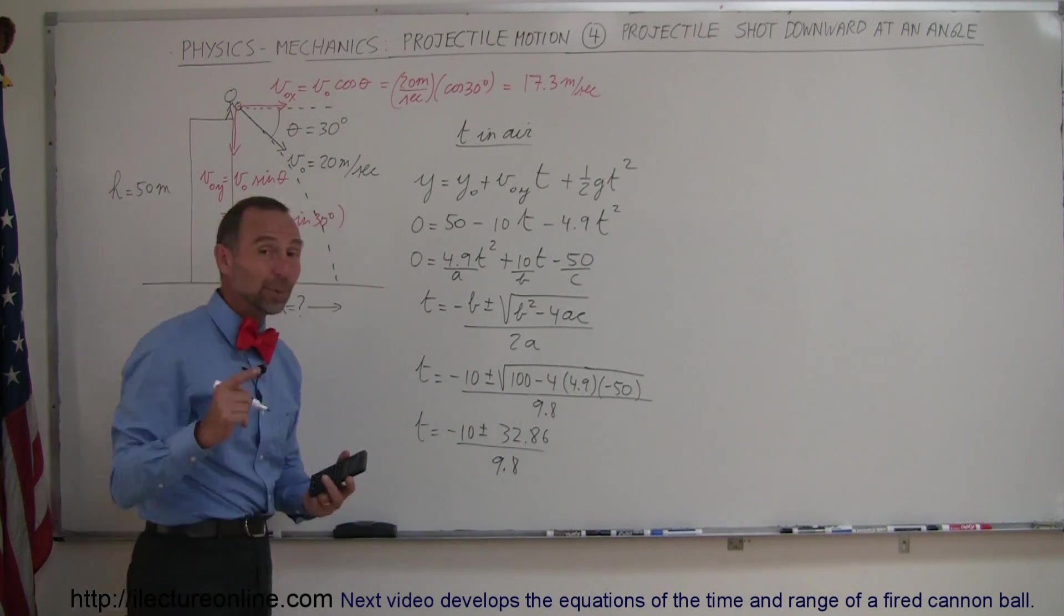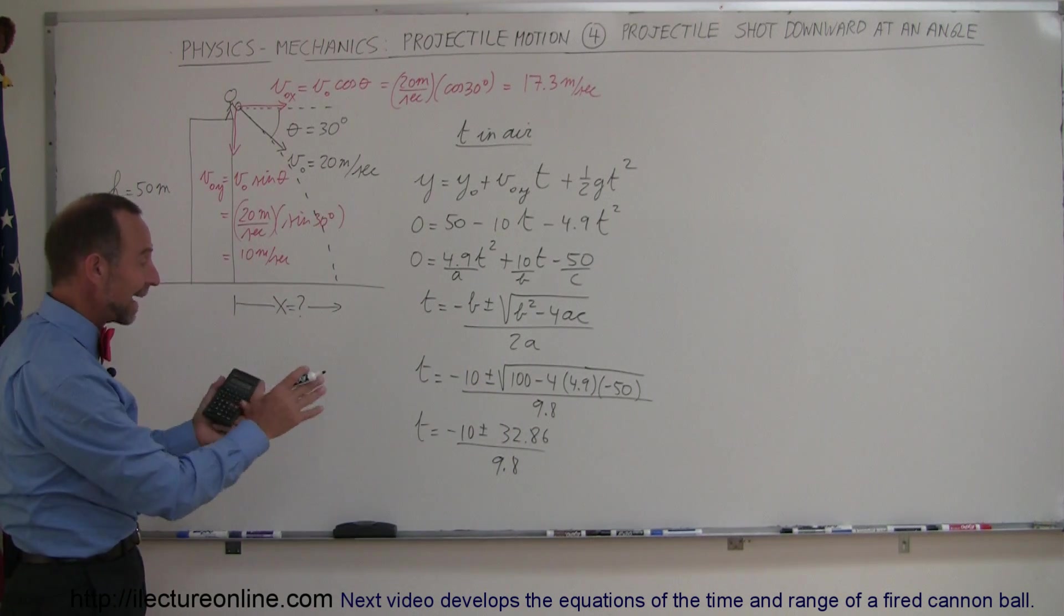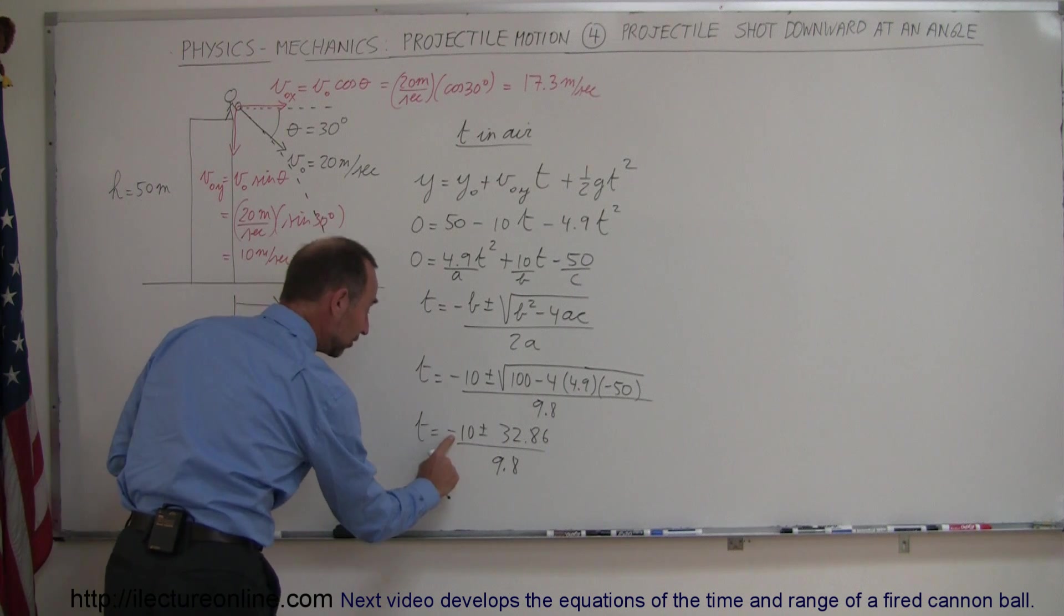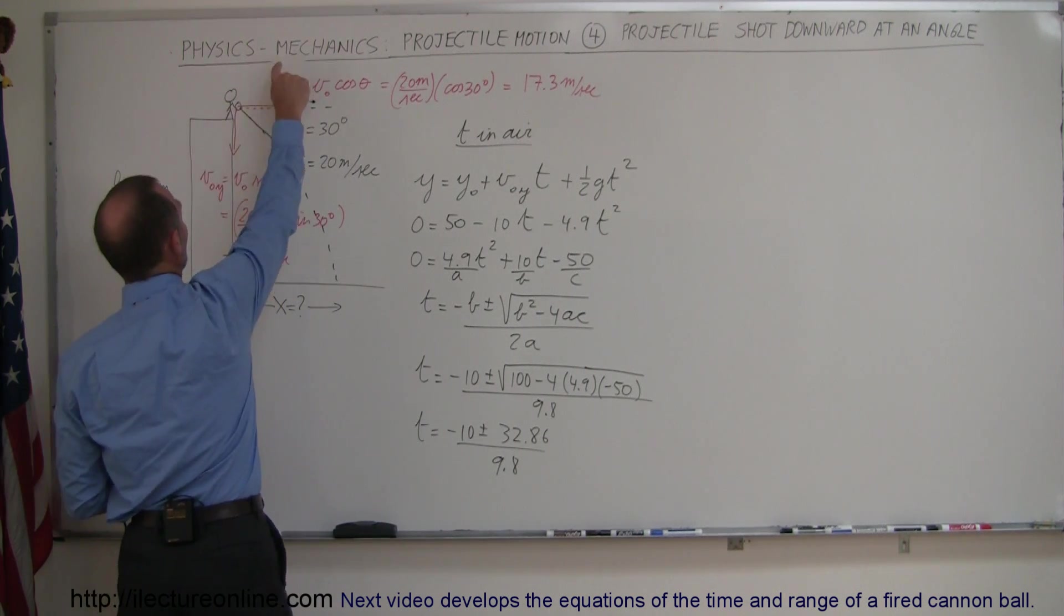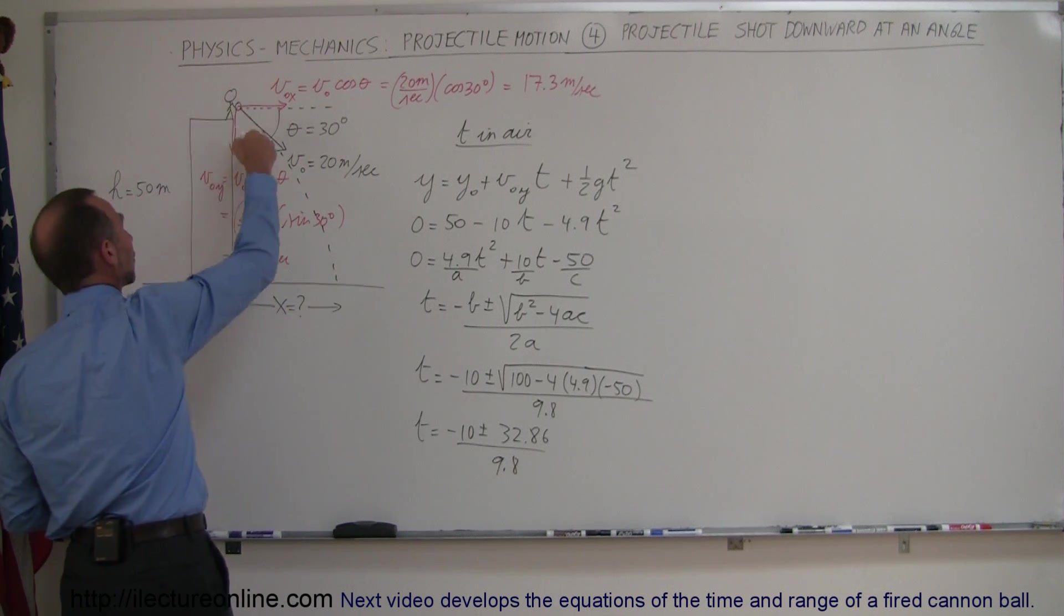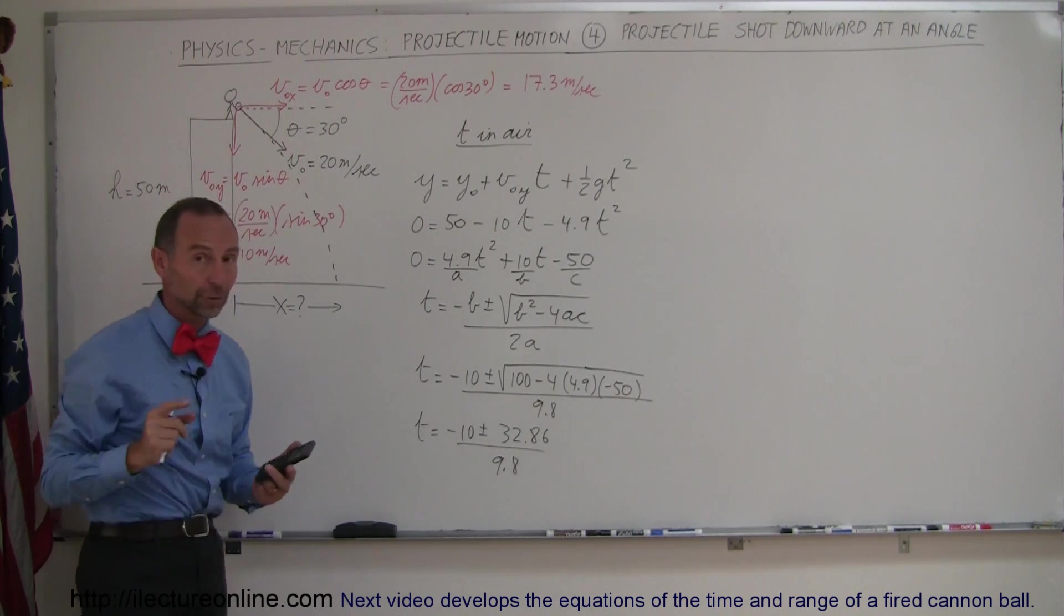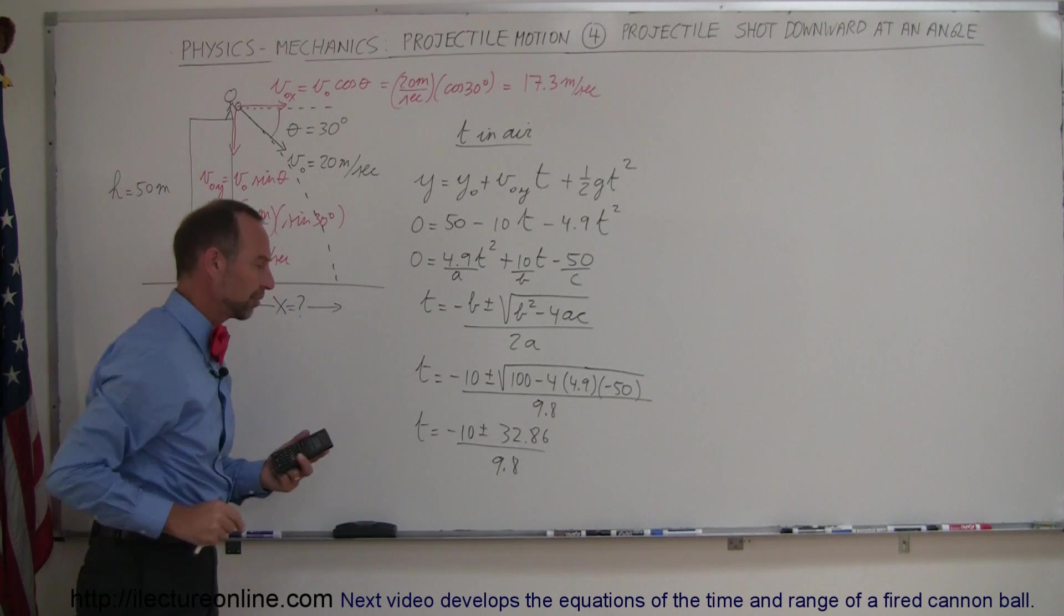If you've looked at the previous video you realize you get the exact same result with the only difference that this is a minus 10 instead of plus 10, because there the projectile was shot upward at an angle of 30 degrees. Here it's shot downward at an angle of 30 degrees, that's where the minus comes from.